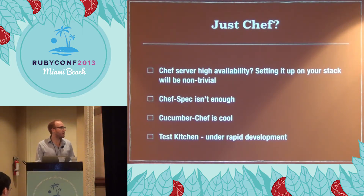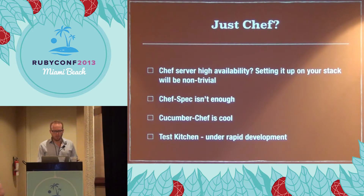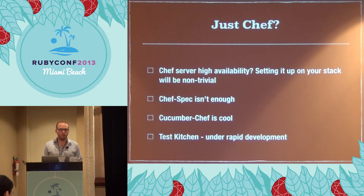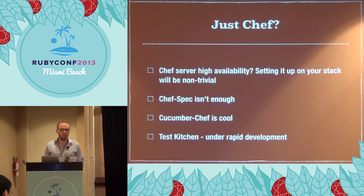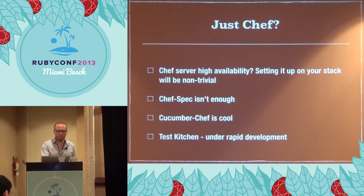ChefSpec — the testing library that is out there for it — is pretty much just a unit test. It just doesn't actually do anything; it just tests that your code can run. There are some other tools like Cucumber Chef, which comes from the book Test-Driven Infrastructure Using Chef. You get to write Cucumber tests that deploy actual AWS resources and then run your tests on those servers. It's a pretty cool tool, but it's not under active development and not quite flexible for what we wanted.